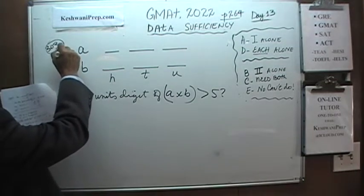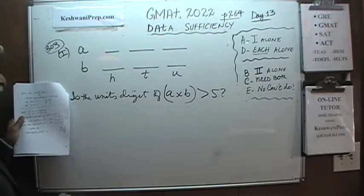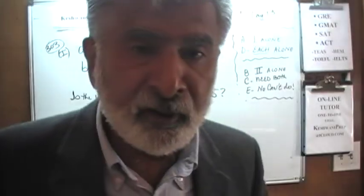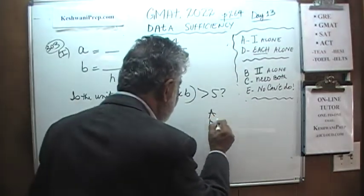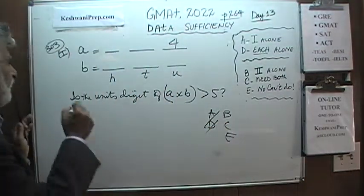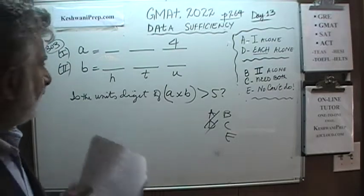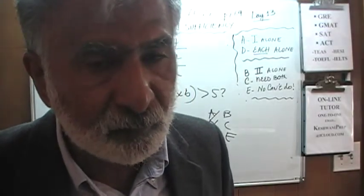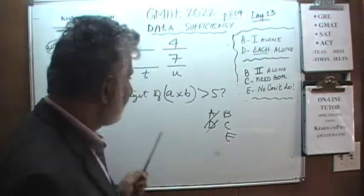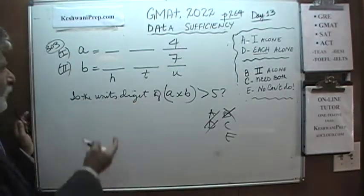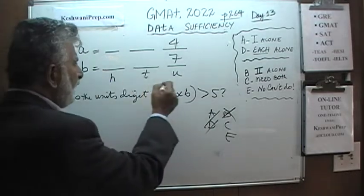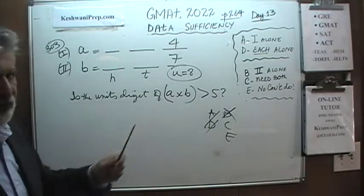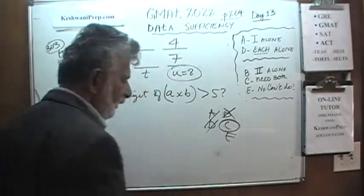The second statement tells us the units digit of B is 7. Knowing B ends in 7 by itself also does not enable us to figure out the units digit of A times B. But when we put the two statements together, it doesn't matter what the full values of A and B are — when we multiply them, the product will end in 8, because 7 times 4 is 28. Is the units digit 8 greater than 5? Yes. The answer is C — both statements together are needed.